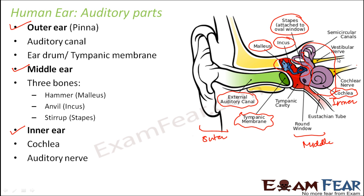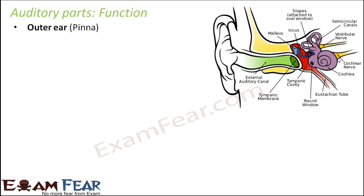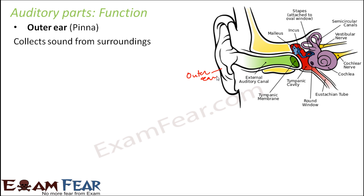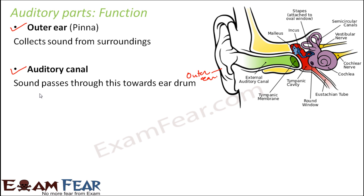Now let us look at the functions of the various parts of the ear. Starting with the outer ear — the pinna — its purpose is to collect sound from the surroundings. Being the outermost part, it collects all sound and sends it inside through the auditory canal, through which the sound passes towards the eardrum.